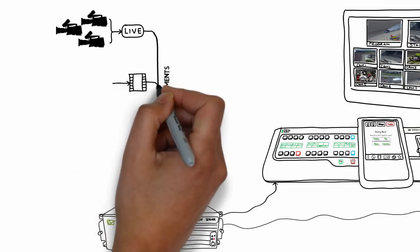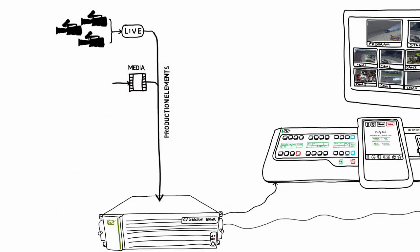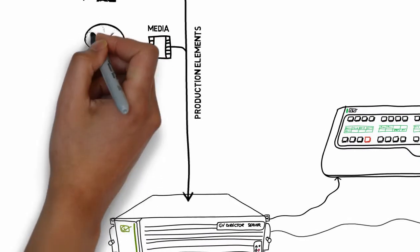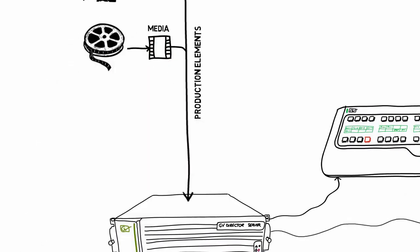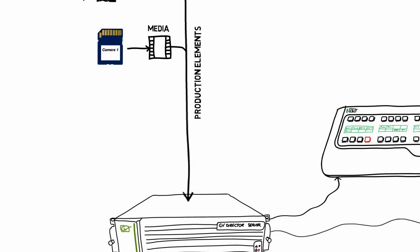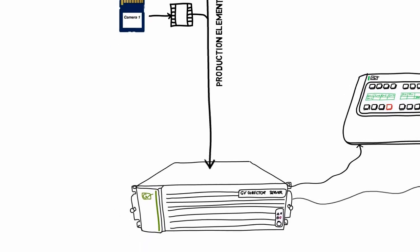As well as live cameras, you might also want some pre-recorded media in your program, perhaps some shots from archive, or a still, or just pre-prepared studio recordings. These have to be stored somewhere, and that is on the GV server, where we find some high performance drives and a set of codecs to play out that media and allow you to intercut it with the live cameras.